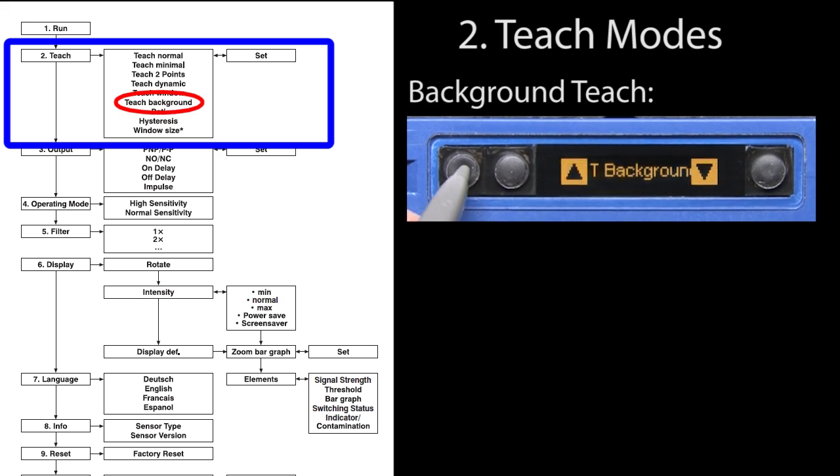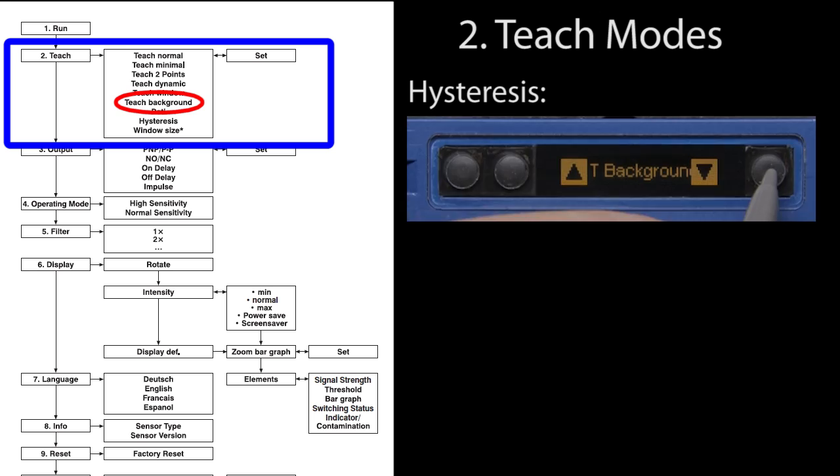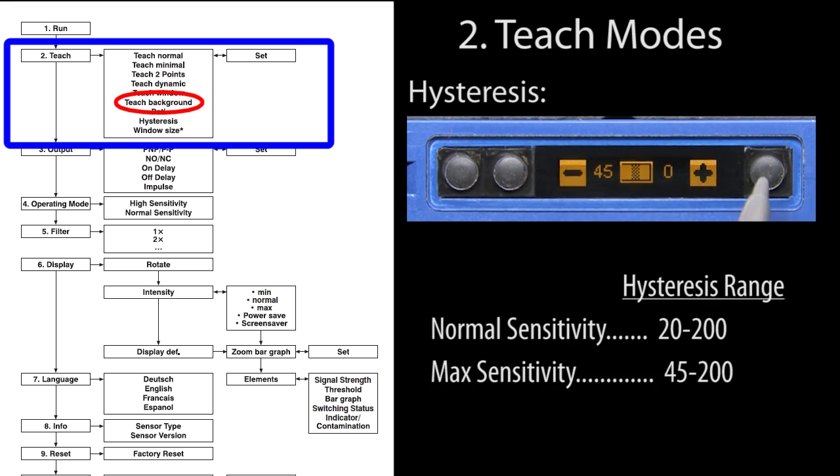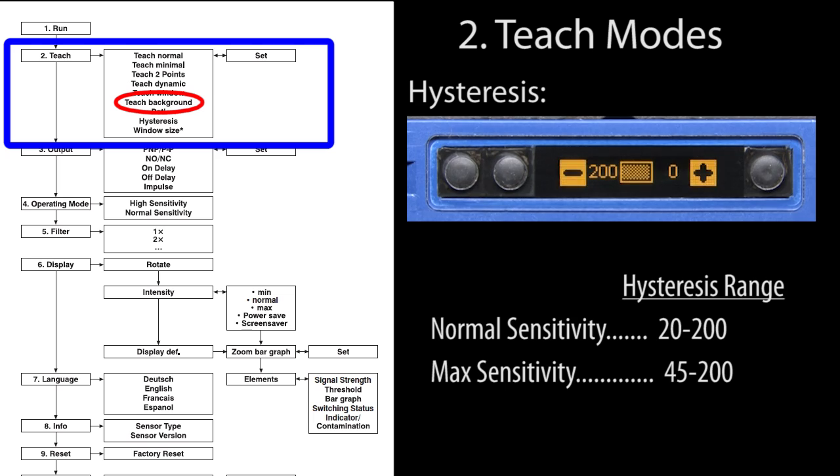The final teach mode is background. Just point the sensor at the background and hit the T key. The sensor automatically sets the threshold just above the background. There is also a hysteresis setting that you can adjust just like all the others. The only catch is the amount of hysteresis you can use depends on the sensitivity setting you set for the sensor. This sensor is on high sensitivity so I can only select a hysteresis of 45 to 200. On normal sensitivity you can change hysteresis from 20 to 200.